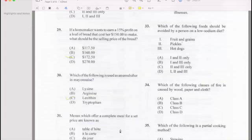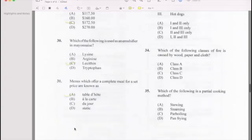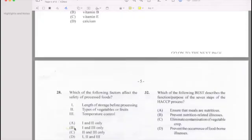Number 31: Which menu is a set? A menu which offers a complete meal for a set price is known as table d'hôte. Number 32: Which of the following best describes function of the step? Answer is D.